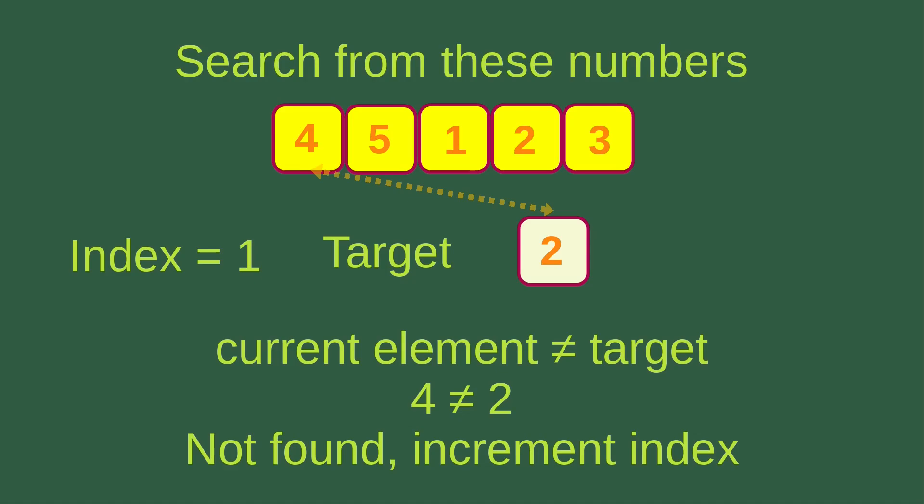In this case, we increment the index. Now the index is incremented to two, meaning I'm trying to see whether the second element equals the target or not. The current element is now five, and the target is two. So five is not equal to two — the target is not yet found.